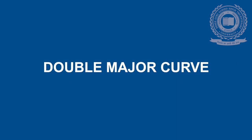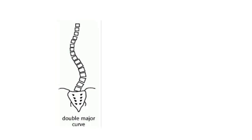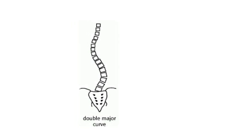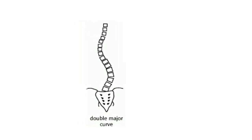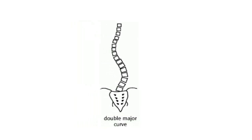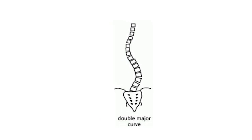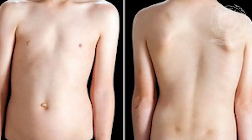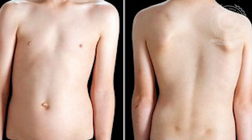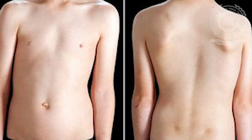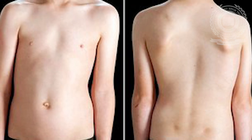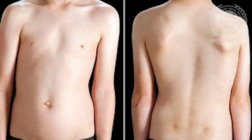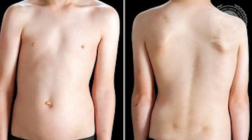Double major curve: typically, a double curve involves a right thoracic curve on top and a left lumbar curve on the bottom. People who have a double major curve may initially have a less obvious deformity because the two curves balance each other out.